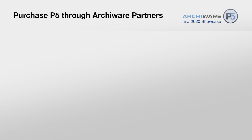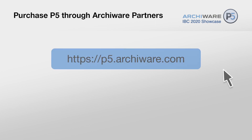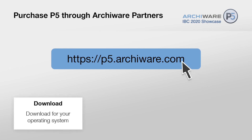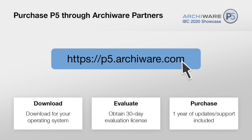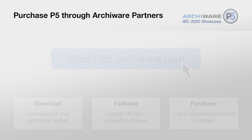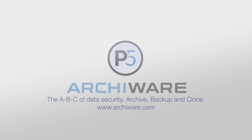P5 can be purchased through ArkyWare partners. Go to p5.arkyware.com where you can download the version of the software for your operating system, evaluate it with a 30-day evaluation license, and research a purchase which will include one year of technical support and software updates. ArkyWare P5 — the ABC of data security: archive, backup, and clone.